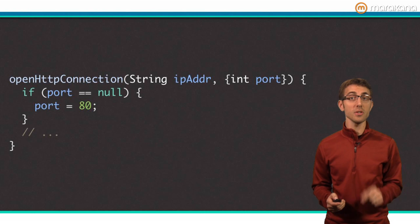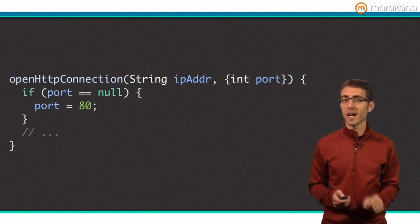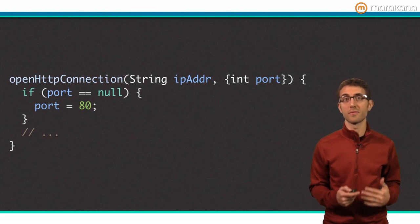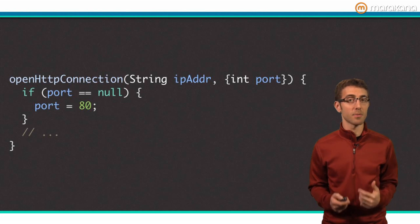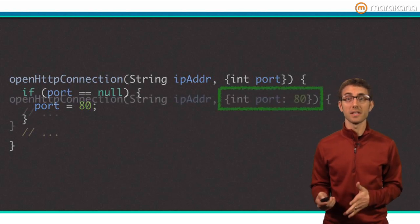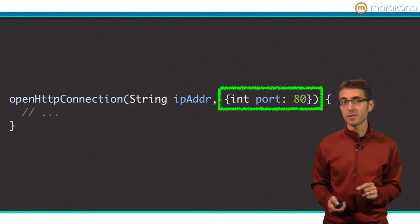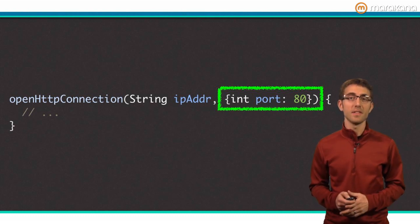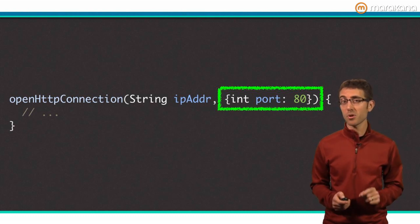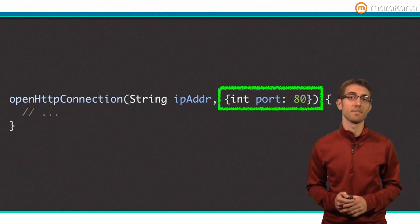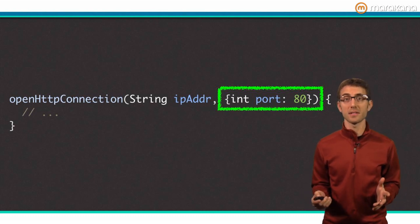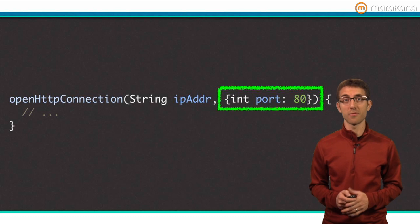The function is easier to use now because the user doesn't have to specify the obvious. However, the code inside the function is a bit verbose. Plus, there's no way to express to the user what the port's value is if it is not provided. Luckily, Dart lets us specify a default value for a parameter if that parameter is optional. Here's an example. This code is simpler, the semantics are more clear, and it is self-documenting. You can use any compile time constants, such as integer literals as shown here, for default values.